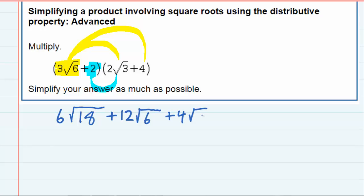And then the square root of three on the inside. Finishing the distribution, two times four gives me just two times four is eight.